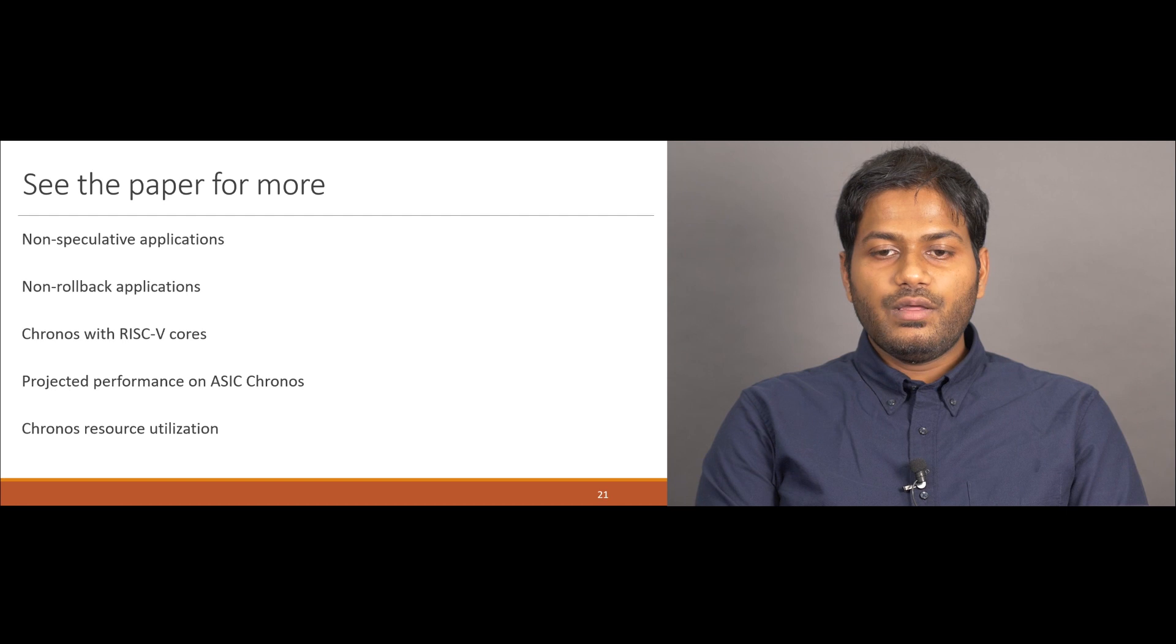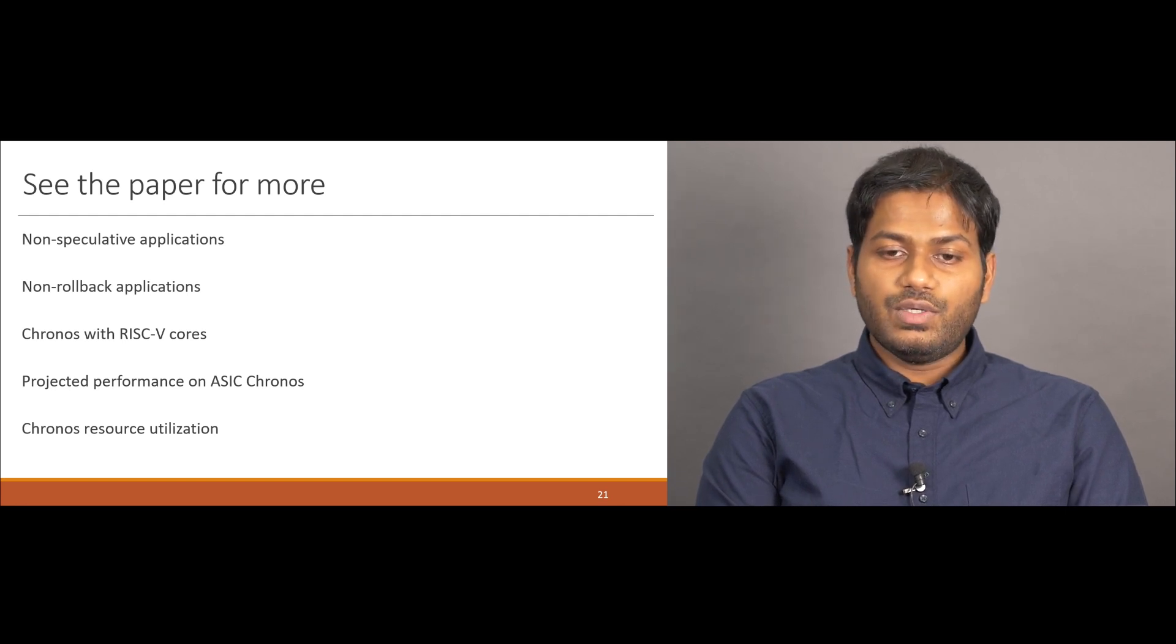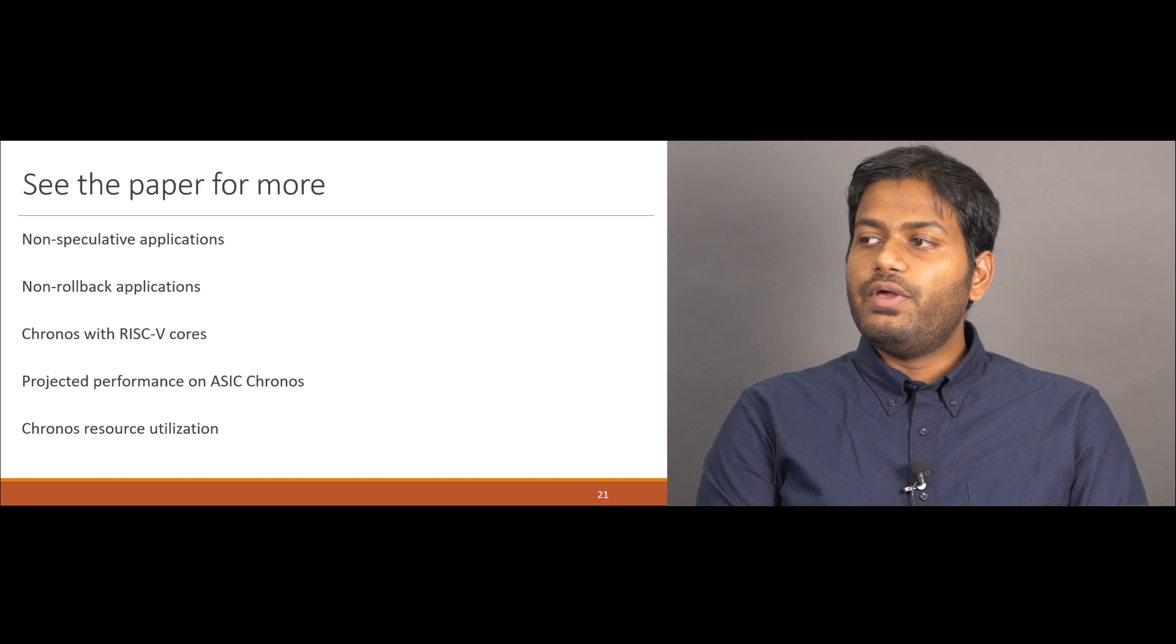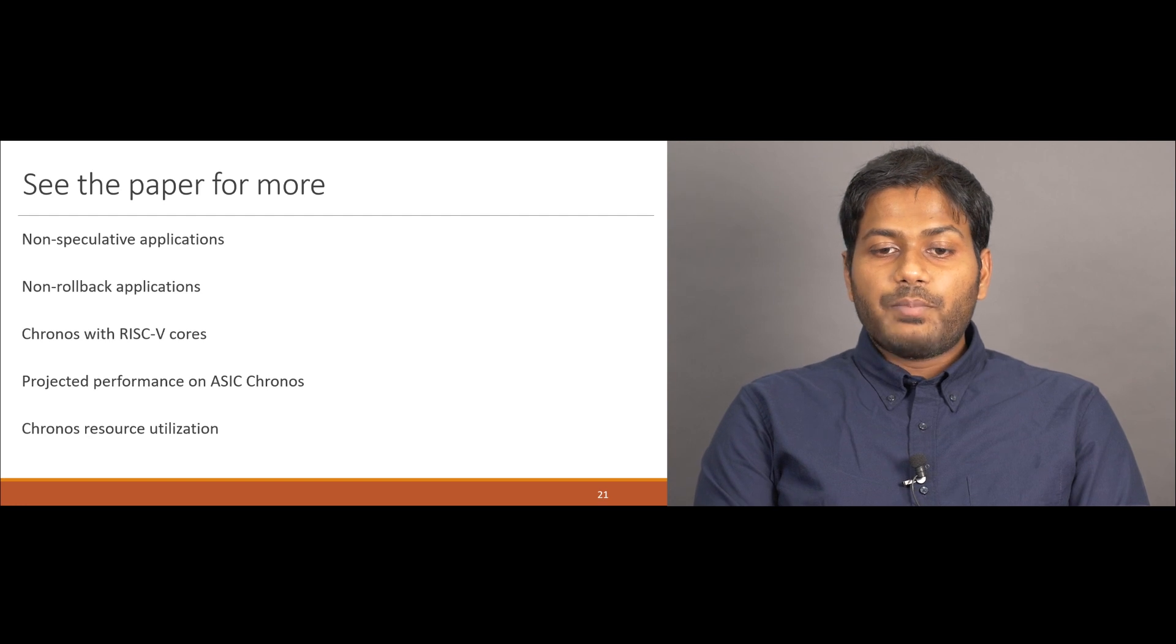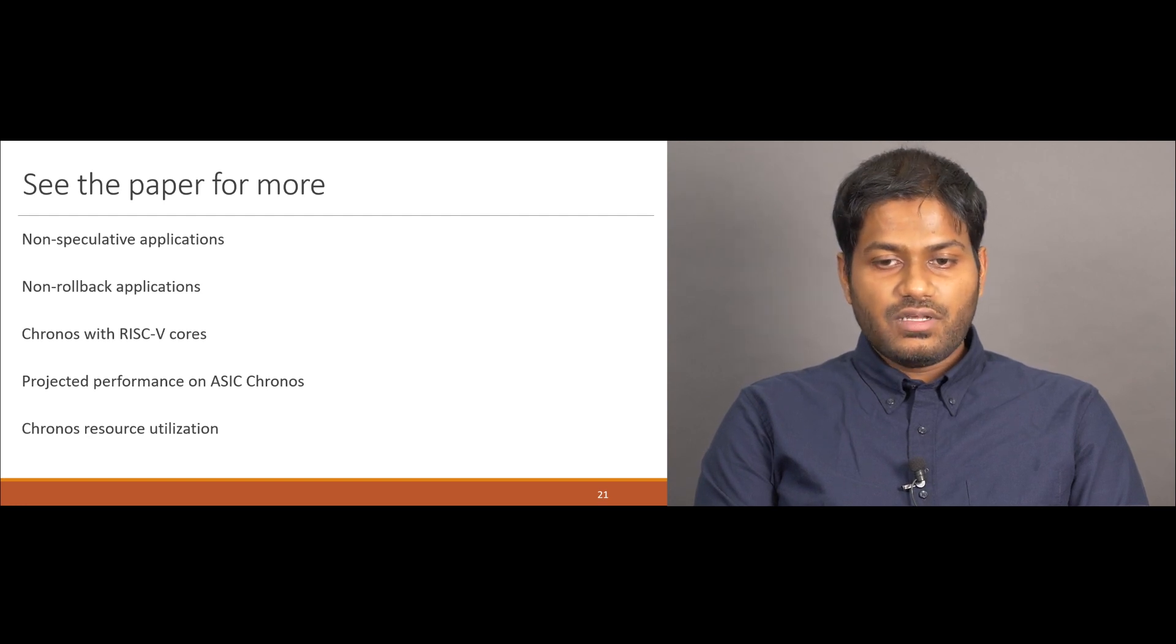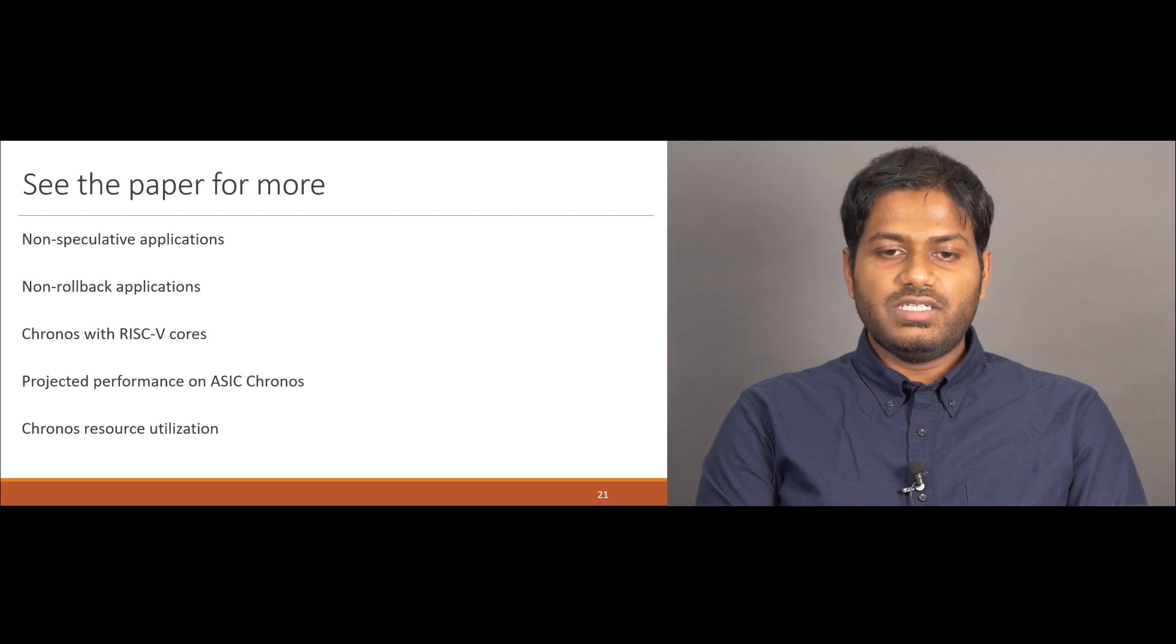In the paper, we show how Kronos performs with traditional non-speculative applications, and also how Kronos can be configured for applications that does not require rollback after task abort. We also have many more results, including how Kronos performs with RISC-V soft cores, projected performance of Kronos on an ASIC implementation, and the resource utilization on the FPGAs.